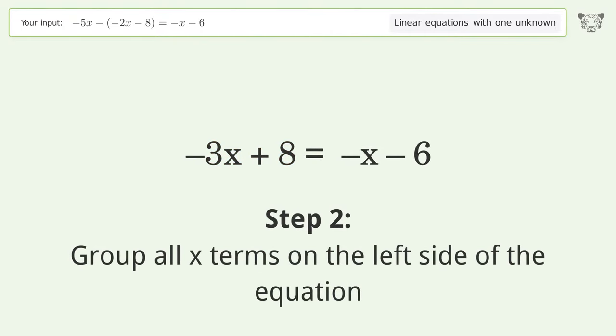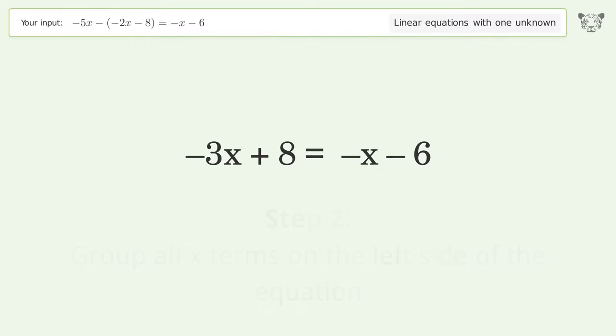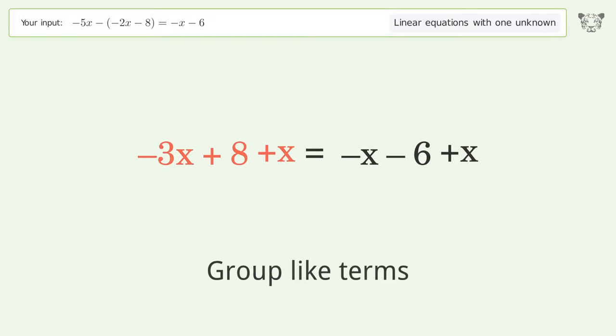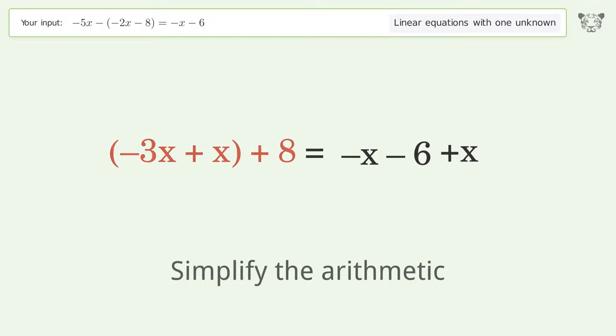Group all x terms on the left side of the equation. Add x to both sides. Group like terms. Simplify the arithmetic.